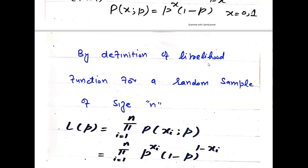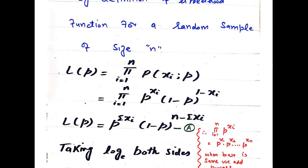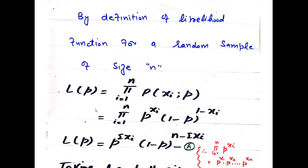By definition of the likelihood function for a random sample of size n, it is denoted by L. L is the mathematical notation for the likelihood function, and p is the parameter we want to estimate. The product runs from i = 1 to n, using Pi notation, which represents multiplication.